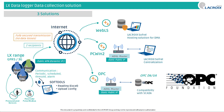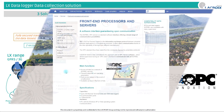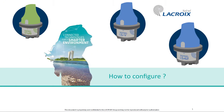PCWin2 also includes self-configuration based on the parameters of the devices. The third solution is OPC Server. You can find the list of all compatible SCADA systems on our website. Let's now see how to configure these different solutions in the data logger configuration.